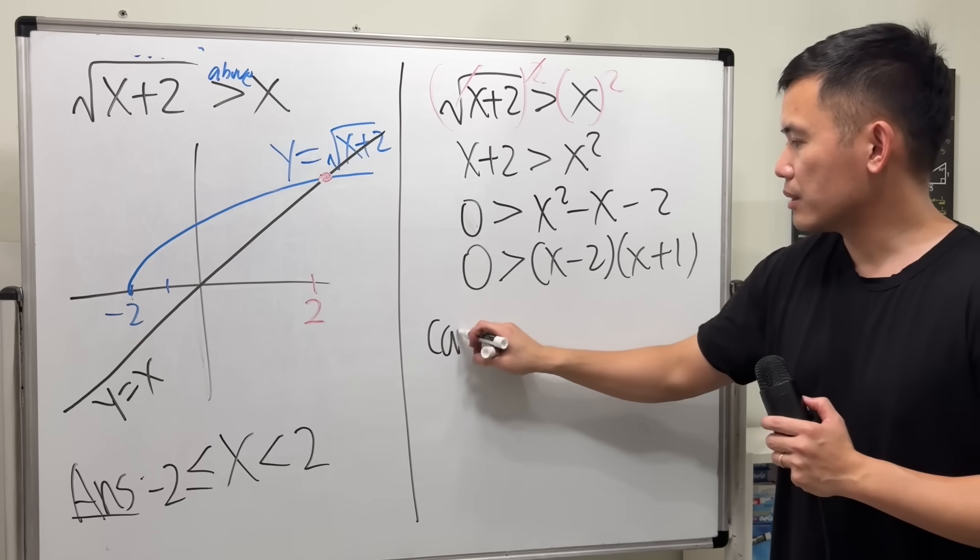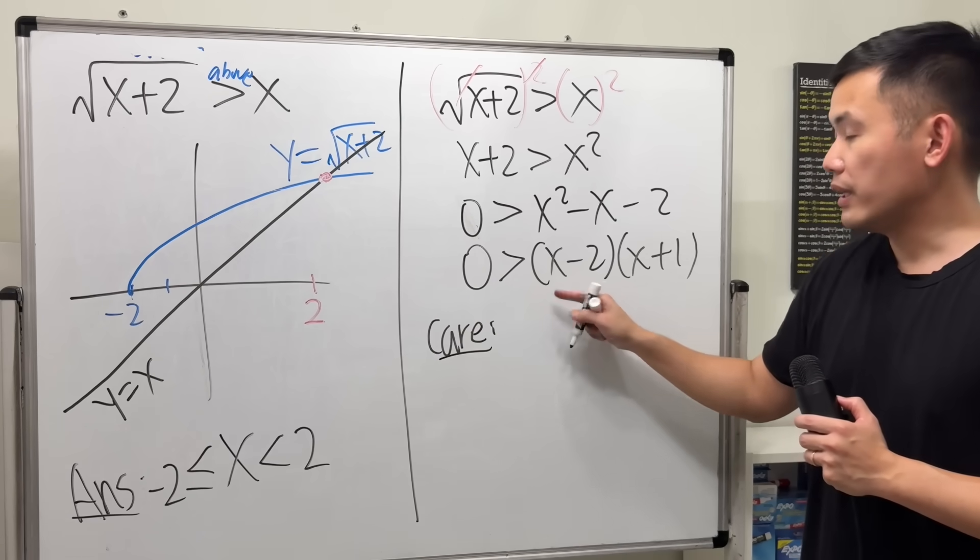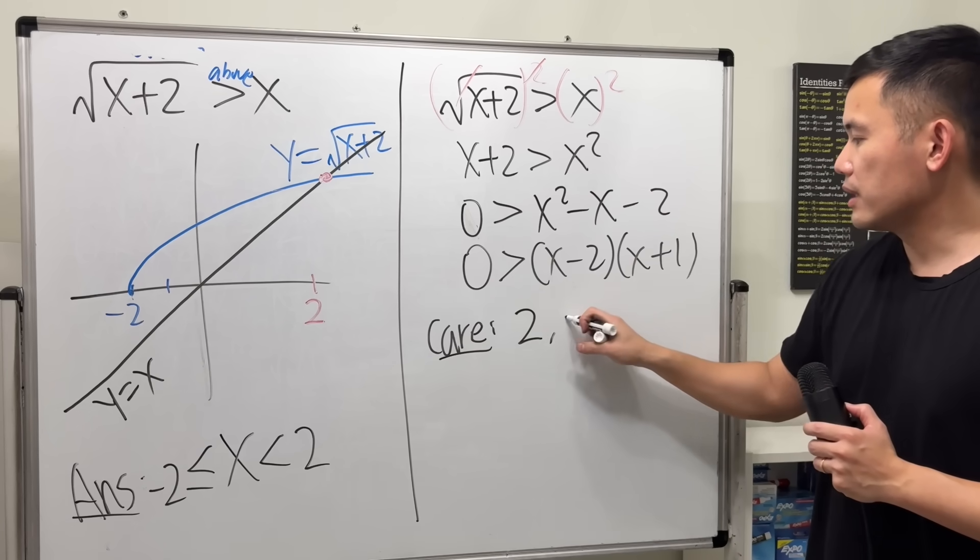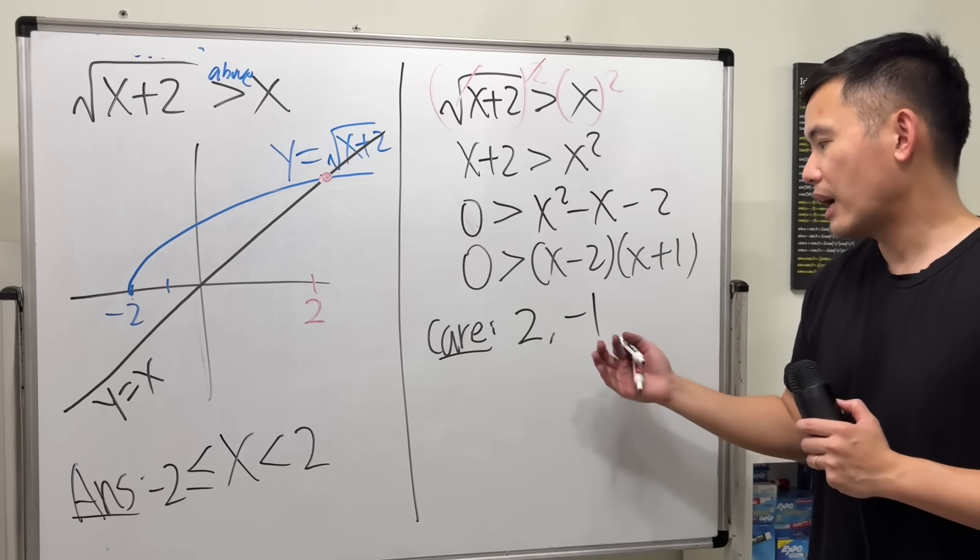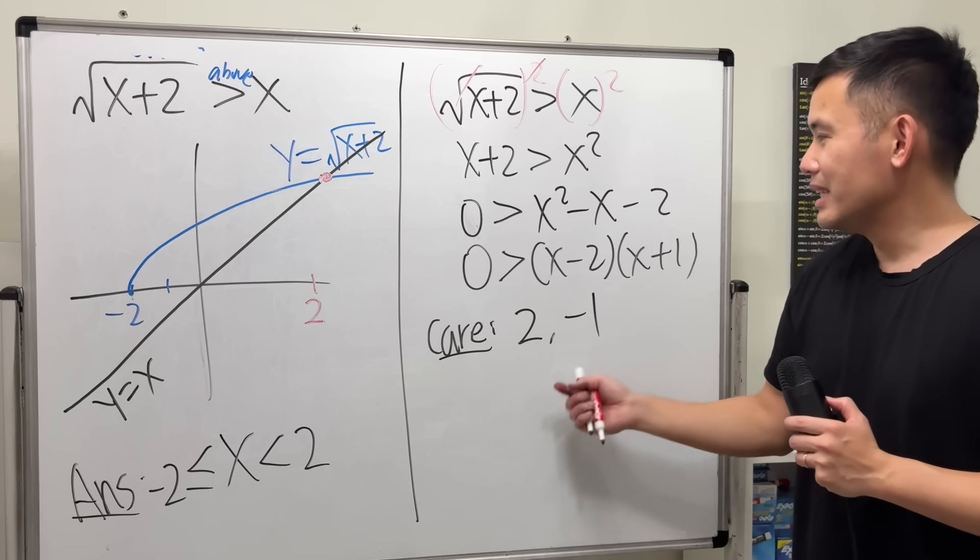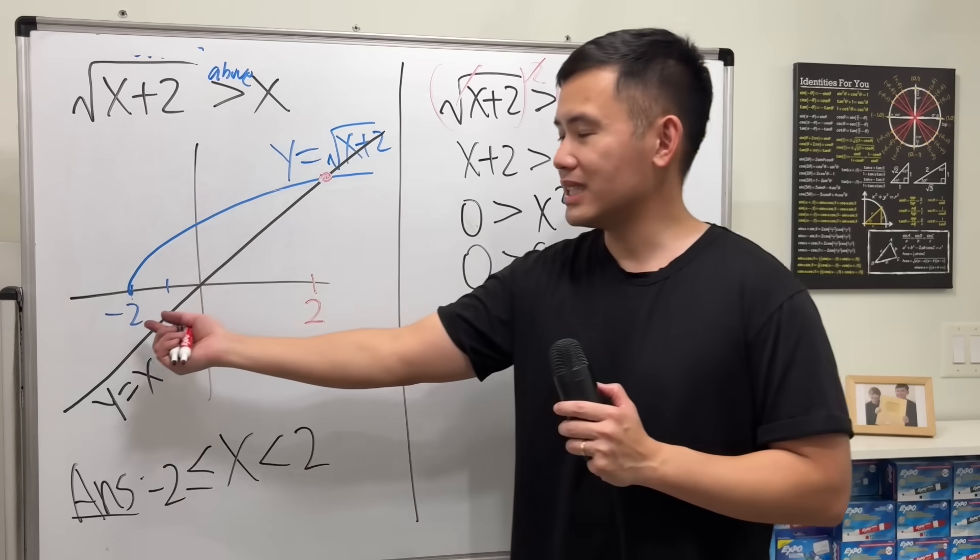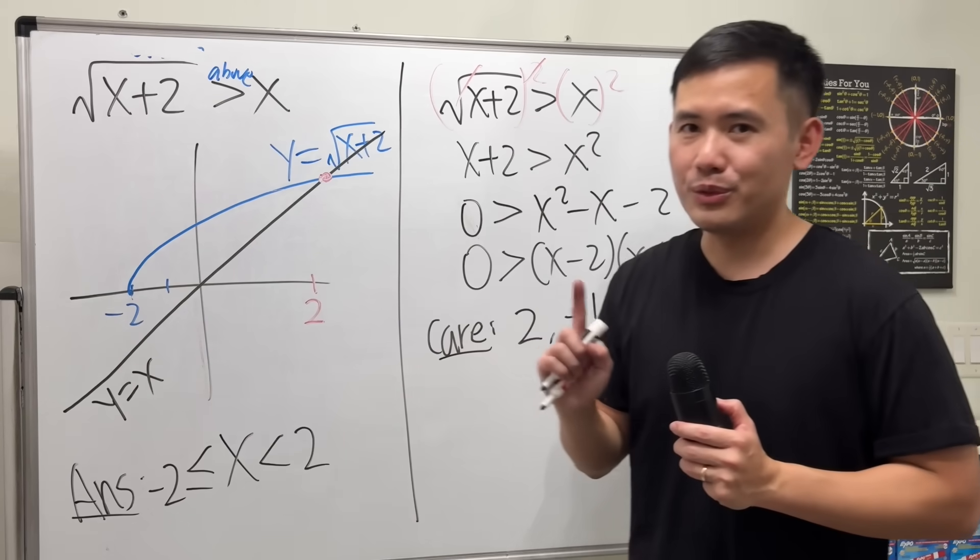And right here, we care about when x is 2, we get 0, so we care about 2. From here, we care about negative 1. But I think you see already, if you just square both sides, you have 2 and negative 1. You don't get the negative 2. Be really careful.